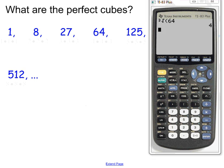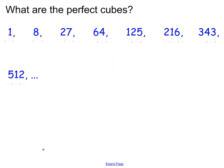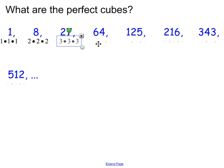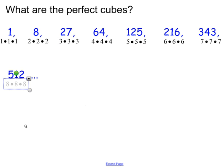What are the perfect cubes? If we just go through each natural number and raise it to the third power, that's one way to derive the perfect cubes. For example, 1 times 1 times 1 is 1, so 1 is a perfect cube. 2 times 2 times 2 is 8, so 8 is a perfect cube. You can just keep doing this and you'll get the perfect cubes.